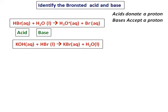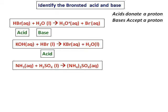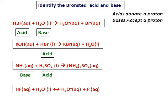Applying the same concept to the second equation, HBr is an acid because it becomes KBr by losing a proton. For the third reaction, NH₃ becomes NH₄⁺ — it has accepted a proton, so it is a base. H₂SO₄ loses a proton to become sulfate, hence it is an acid. For the fourth reaction, HF becomes F⁻ — it is an acid — and water becomes H₃O⁺, hence it is a base.